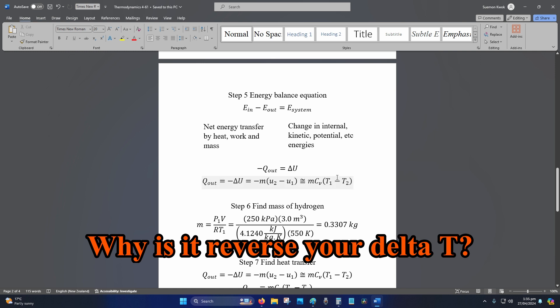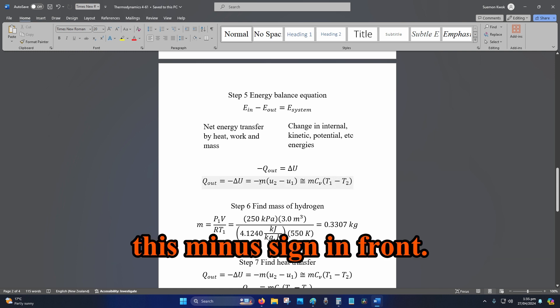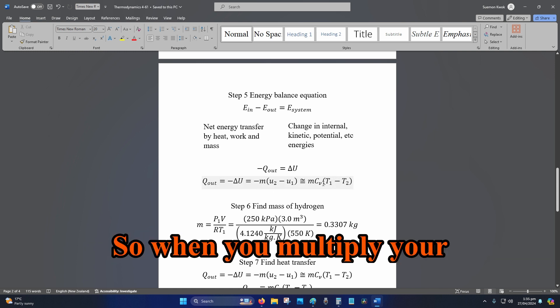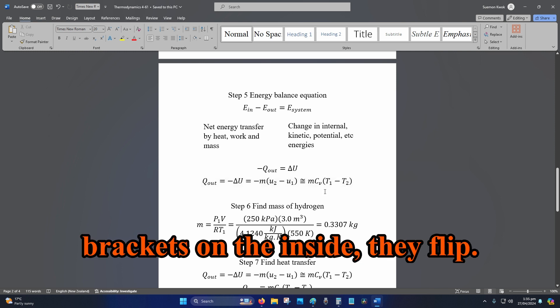Why is it reverse your delta T? Because you've got this minus sign in front. When you multiply your brackets on the inside, they flip.